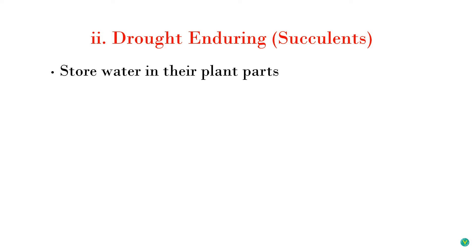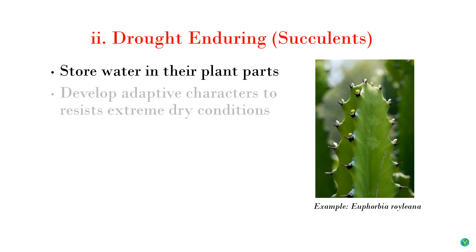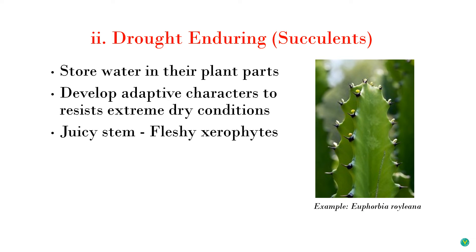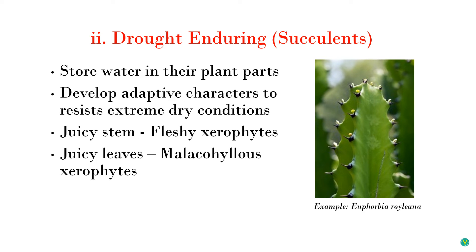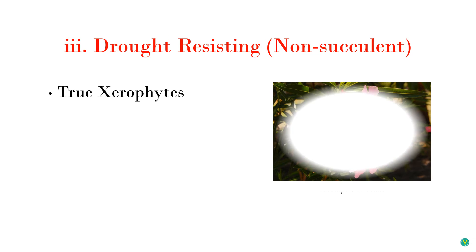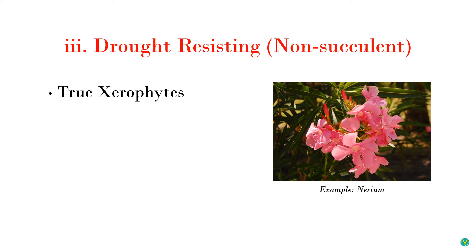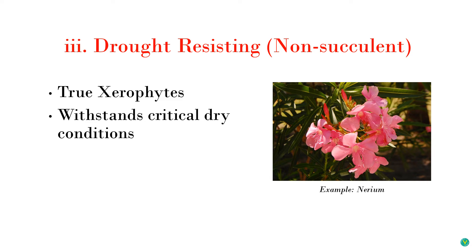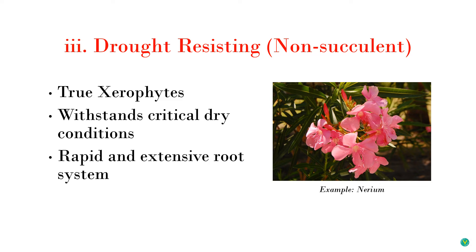Succulents develop certain adaptive characters to resist extreme drought conditions. In some xerophytic plants the stems become juicy or succulent — these are called fleshy xerophytes — and those in which leaves are fleshy are called malacophyllous xerophytes. Next are drought-resisting or non-succulents — these are true xerophytes. They possess morphological, anatomical, and physiological characteristics enabling them to withstand critical dry conditions. They exhibit rapid root growth and form extensive root systems to maximize water supply from depth of soil.